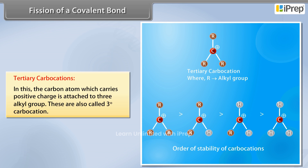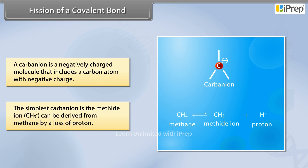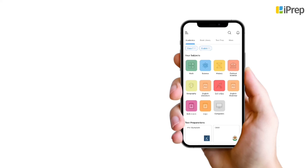The order of stability of carbocations is discussed. A carbanion is a negatively charged molecule that includes a carbon atom with a negative charge. The simplest carbanion is the methide ion, which can be derived from methane by the loss of a proton.